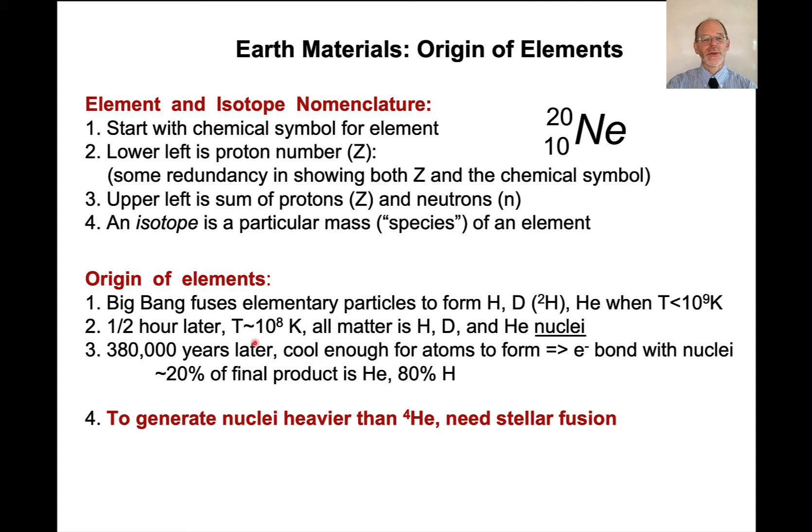And it also formed some helium when the temperature dropped below about a billion kelvins. When the temperature dropped to about 100 million kelvins, all matter was in the form of hydrogen, deuterium, and helium nuclei. Okay, so the nuclei are formed. Temperatures are so high, the electrons haven't actually bonded to it. So it takes another almost a half a million years for the universe to cool enough for atoms to form, in the sense of electrons bonding with nuclei.